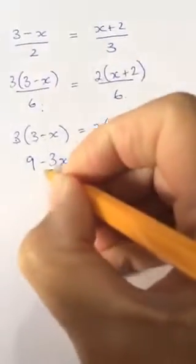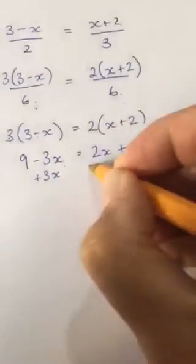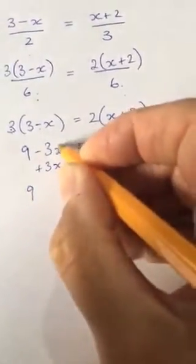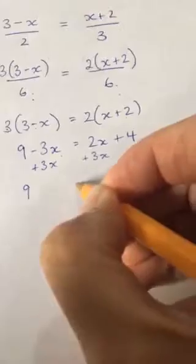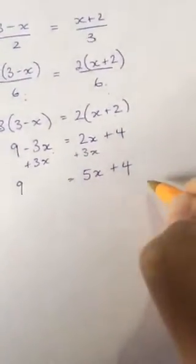So I'm going to do the opposite. I'm going to add 3x to both sides. I get 9, negative 3x plus 3x is 0. 2x plus 3x is 5x plus 4.